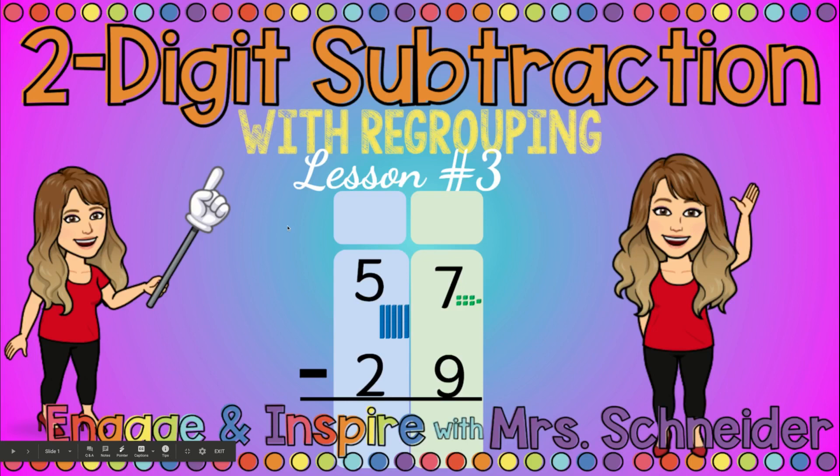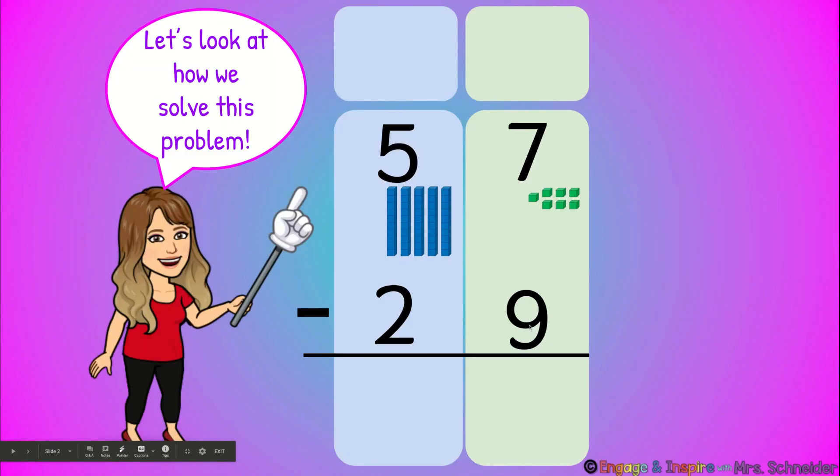Today we will be subtracting two-digit numbers with regrouping using the algorithm. Let's look at how we solve this problem. 57 minus 29. 57 is made of five tens and seven ones.